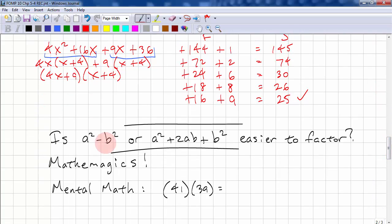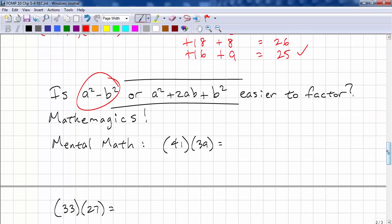So the question is, is a² minus b², or a² plus 2ab plus b², easier to factor? Well, clearly this is easier. We don't have to do any checking. Now, time for some mathemagics. 41 times 39. We can use the difference of squares. We can do this in our head. This is (40 + 1) times (40 - 1). This means it's 40² minus 1². This is 1600 minus 1. And that's 1599.